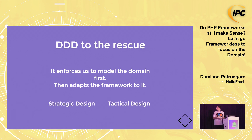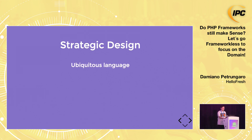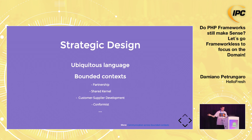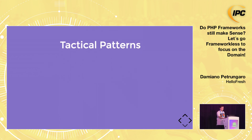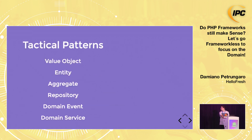DDD can be split into two big areas: strategic design and tactical design. I will be going into some topics from both. Now I will be listing a lot of terms that you may know or not — first: ubiquitous language, then bounded context, then partnership, shared kernel, customer-supplier development. On tactical design there are value objects, entities, aggregates, domain events, and domain services. Now that all of you are confused, I can start explaining them.